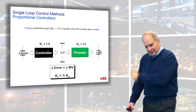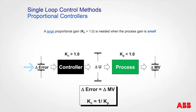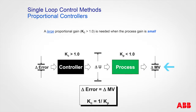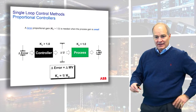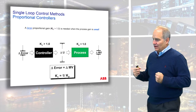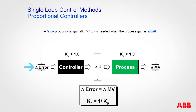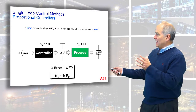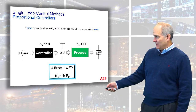Think of process gain: it takes a big actuator change to get anything to happen, like a garden hose — you have to open it a lot to fill a bucket. The controller gain has to be greater than one to give an output large enough to zero the error, because the process gain absorbs the change in actuator. The actuator change may be large but gives only a very small process gain. The goal is to get the change in error to stop.